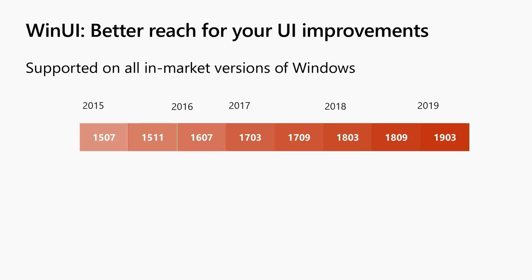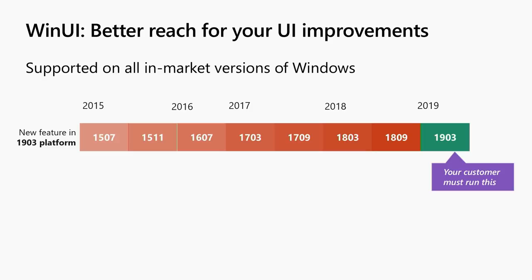The problem is your customer has to update to 1903 in order to actually see those improvements. Any of your customers that are on versions of Windows from 2017 or 2018 aren't going to see those improvements quite yet. Especially for enterprises who stay on a particular version of the operating system sometimes for years at a time, it takes a really long time to see the benefit of all that work.